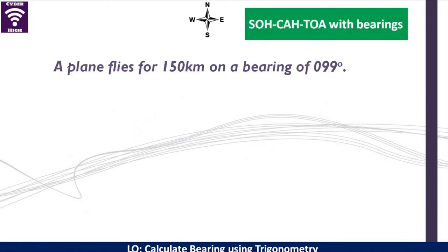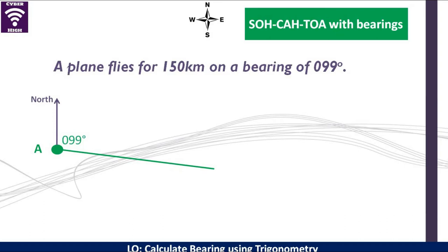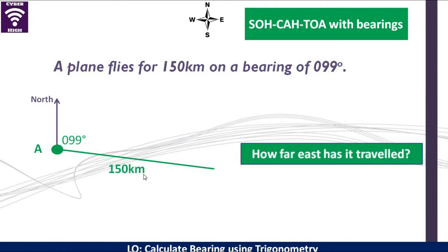Let's now look at the second problem. A plane flies 450 kilometers on a bearing of 099 degrees. So we have to mark our point A, and remember, after marking we have to show where the north direction is. Now we have to measure 099 degrees — this is the angle we are dealing with. This plane is flying for 150 kilometers, so this distance becomes 150 kilometers. How far east has it traveled? How far east is in this direction?